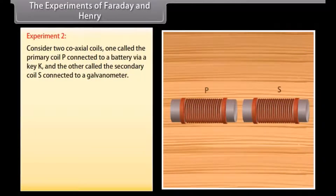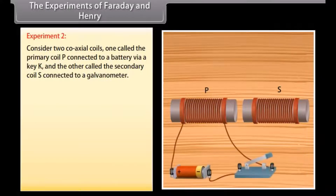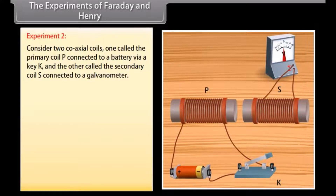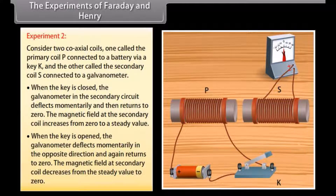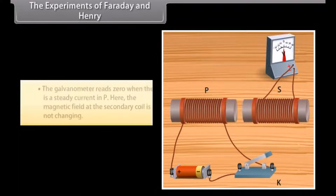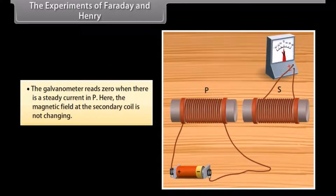Experiment 2: Consider two coaxial coils. One, called the primary coil P, is connected to a battery via a key K, and the other, called the secondary coil S, is connected to a galvanometer. When the key is closed, the galvanometer in the secondary circuit deflects momentarily and then returns to zero; the magnetic field at the secondary coil increases from zero to a steady value. When the key is opened, the galvanometer deflects momentarily in the opposite direction and again returns to zero; the magnetic field at the secondary coil decreases from the steady value to zero. The galvanometer reads zero when there is a steady current in P, as the magnetic field at the secondary coil is not changing.